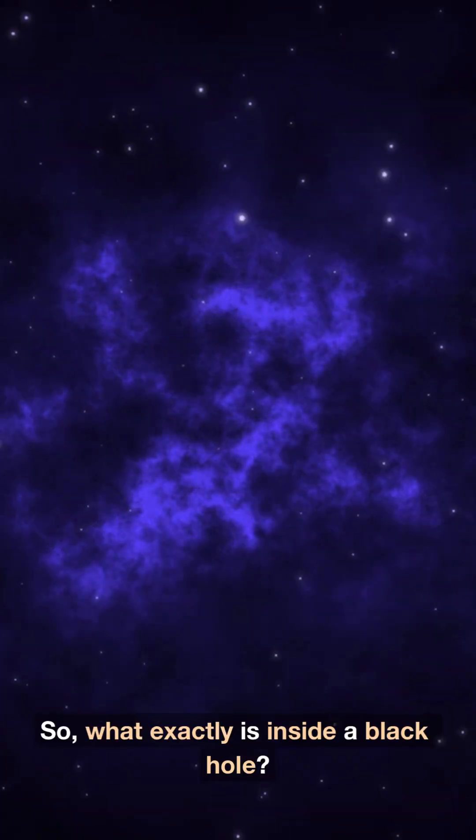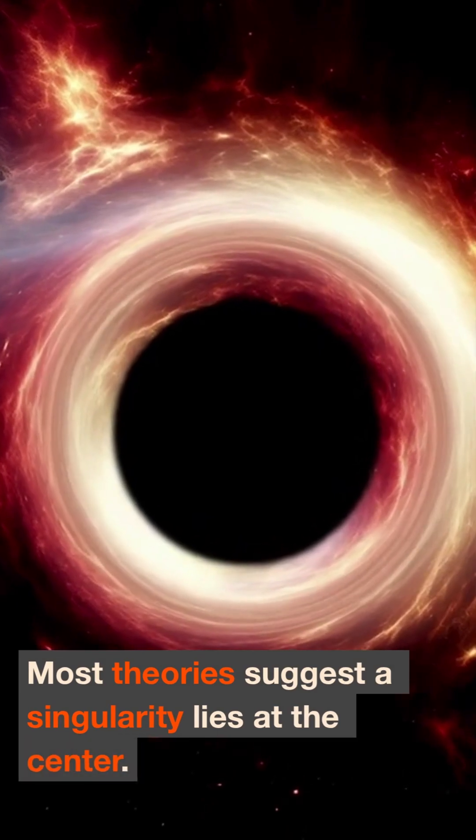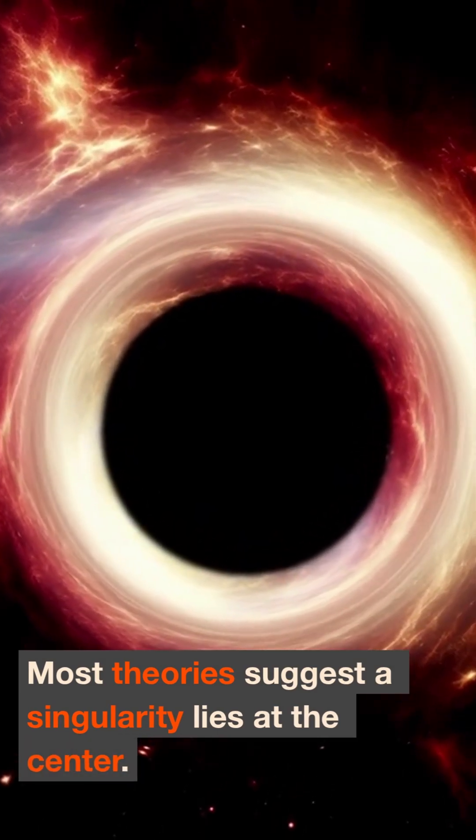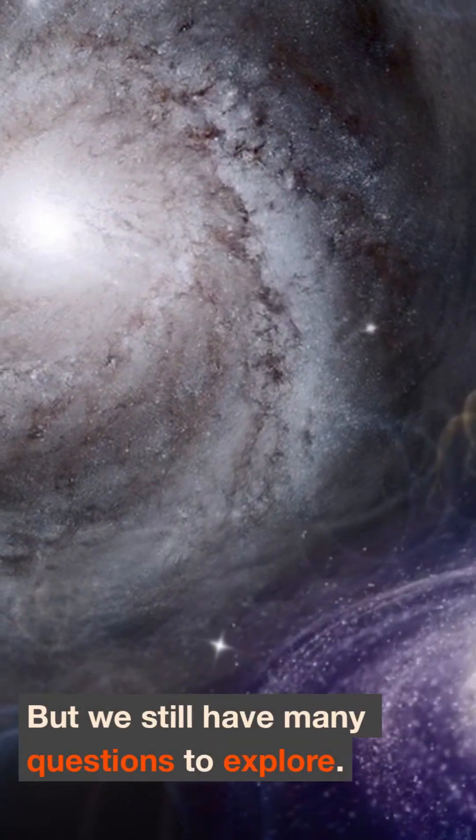So what exactly is inside a black hole? Once something crosses the event horizon, it's lost forever. Most theories suggest a singularity lies at the center. This is where all the mass is concentrated. But we still have many questions to explore.